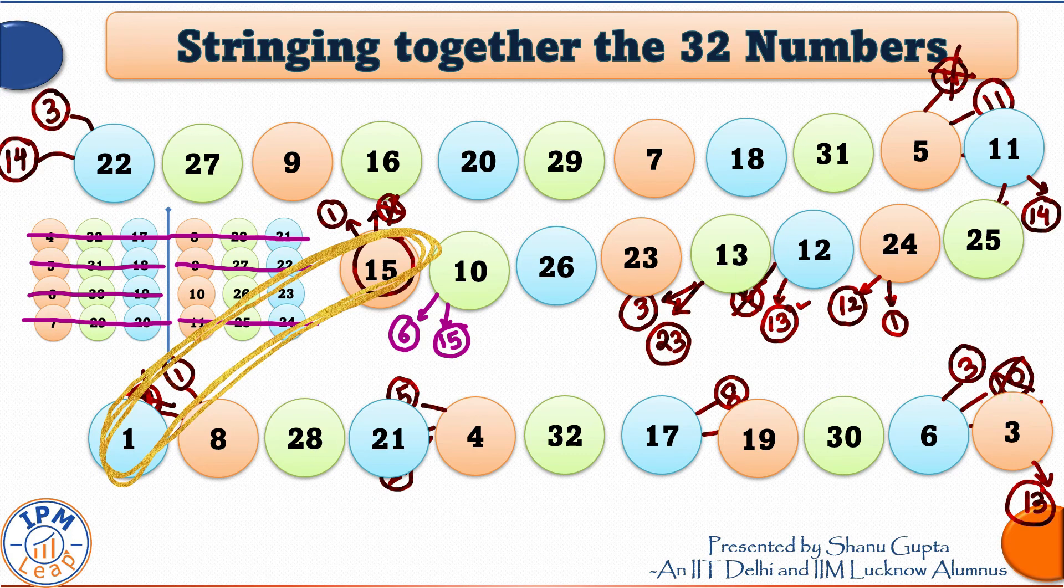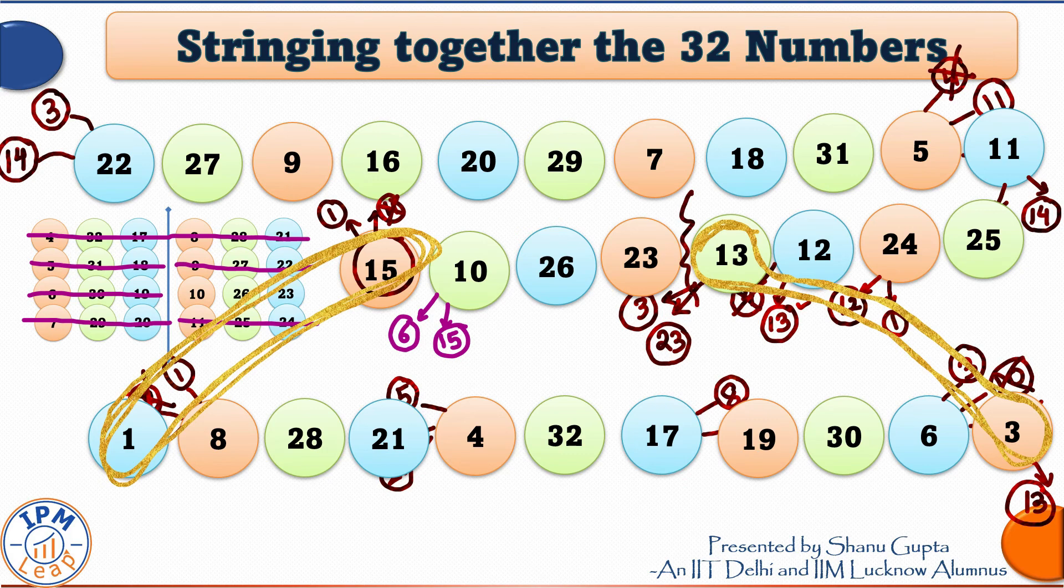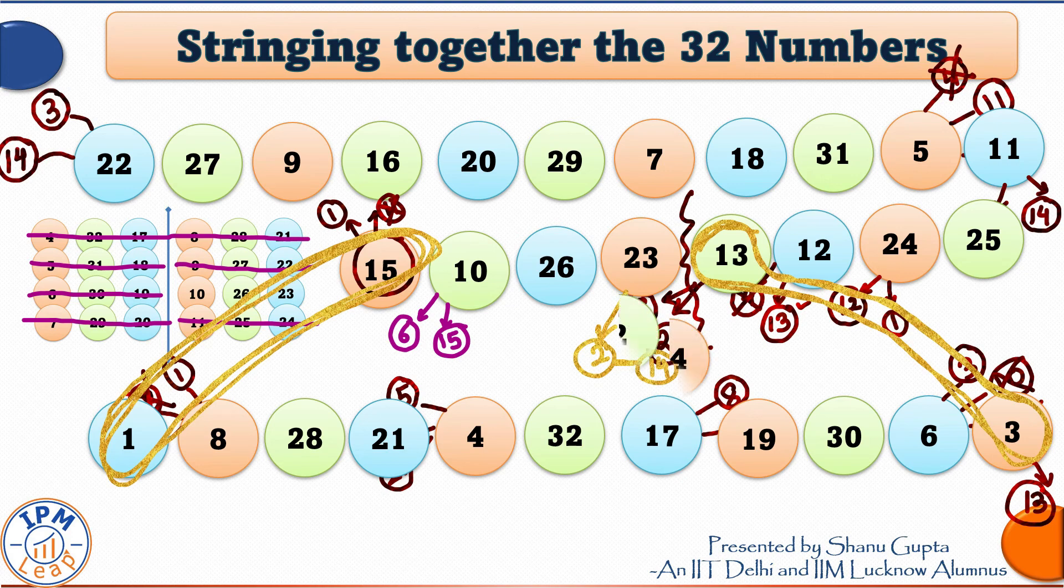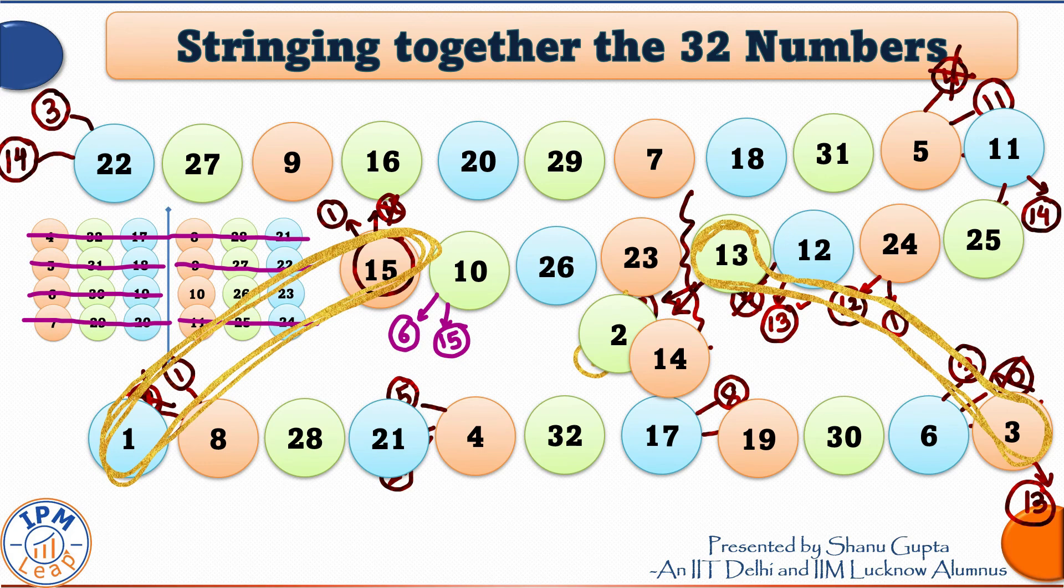And now, technically, 23 is the first number of this string. 23 can be followed by the number 2. And the number 2 by the number 14. That means, we have already cracked the code and looped together 32 numbers in one continuous string.